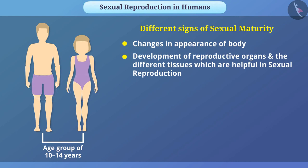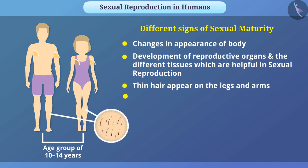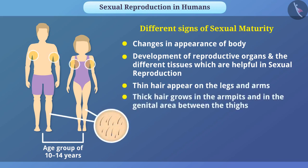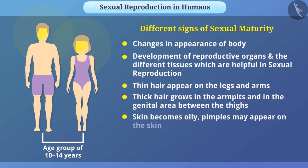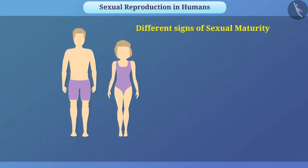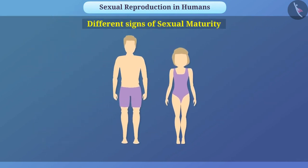Moreover, there are different signs of sexual maturity such as thin hair appearing on the legs and arms, thick hair growing in the armpits and in the genital area between the thighs, the skin becomes oily, pimples may appear on the skin. Along with physical and mental changes, there is occurrence of some hormonal and emotional changes too.